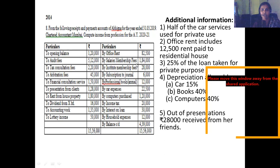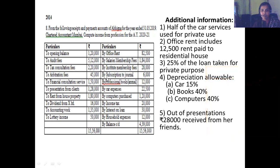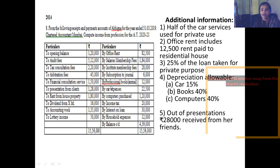Membership fees and salary — salary is ₹1,00,000. Institute membership is ₹28,000 and it is a professional receipt. Subscription to professional journals is a professional expenditure. Professional books is ₹1,00,000 and 40% is the rate of depreciation applicable on books.